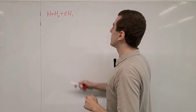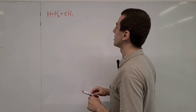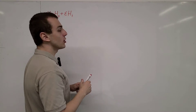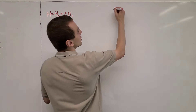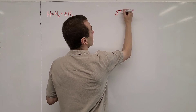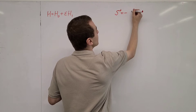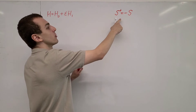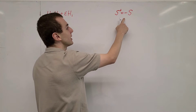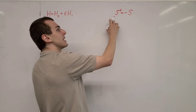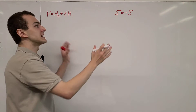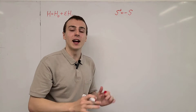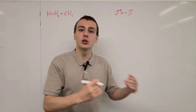Let's get started with the Schrieffer-Wolf transformation. I'm going to define an anti-Hermitian matrix S, where S-dagger is equal to minus S — that is its defining property, which we looked at in the previous video. We're going to take the exponential of S and sandwich the Hamiltonian in between, which allows us to do a unitary transformation.